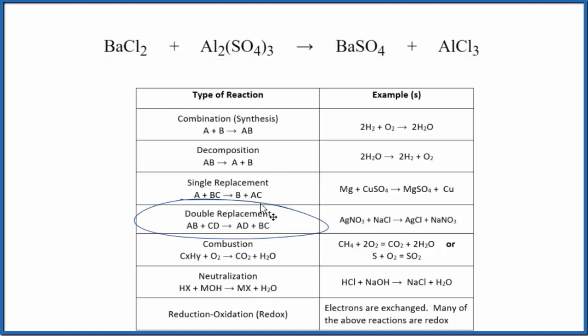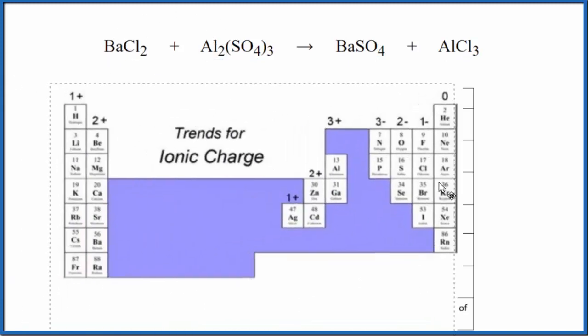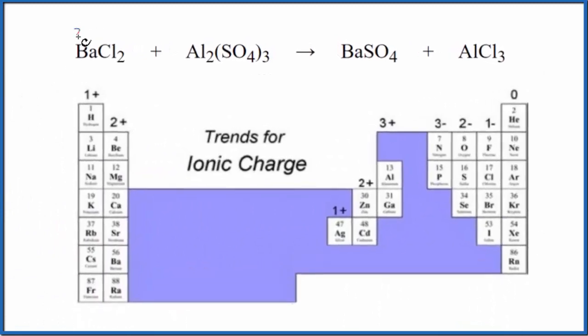So in a double displacement reaction, the positive ions are gonna switch places. So let's write the charges in for each of these. Barium is 2+, chloride is minus, aluminum is 3+. The whole sulfate ion, that's 2-. So these here, they're gonna switch places.